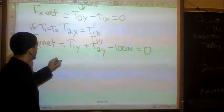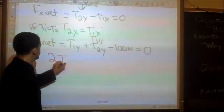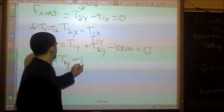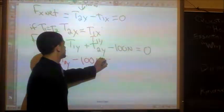I get 2t of y, 1 of y, minus 100 newtons equals 0.